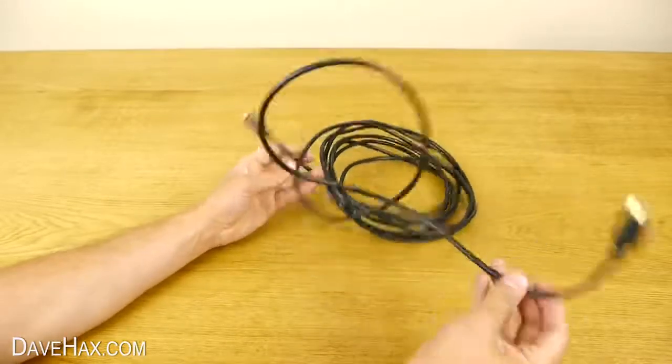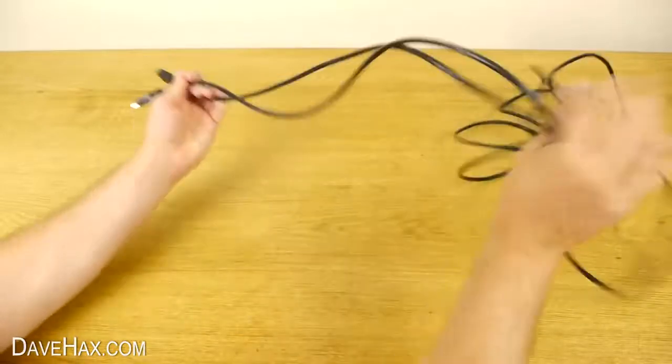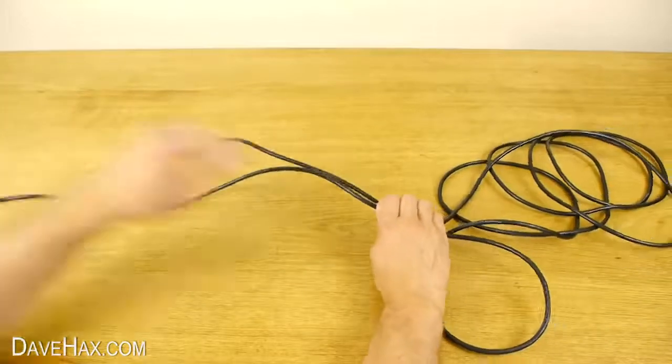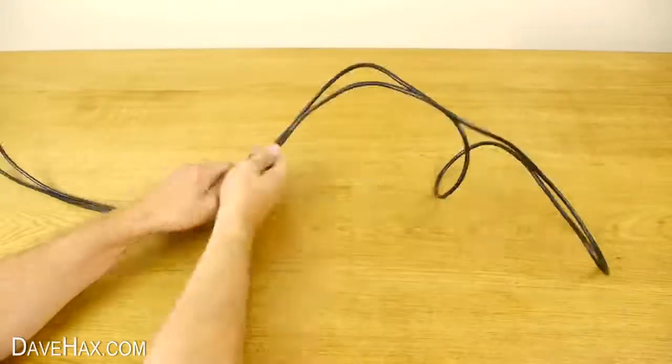Start by uncoiling the cable and put the two ends together like this. Then slide the cable through your fingers to find out where the halfway point of the cable is.